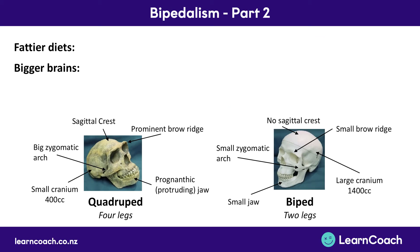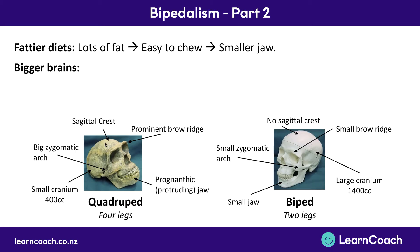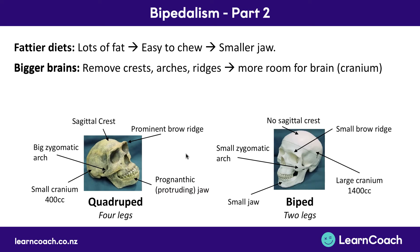So those are the five major changes, and all of these come down to fattier diets and bigger brains. Lots of fat makes food easy to chew, which is why we have a smaller jaw. In addition, we needed smaller jaw muscles. Every piece of bone that sticks out on your head — whether it's a sagittal crest, a zygomatic arch, or a big brow ridge — is for a muscle to attach to. So if you need weaker muscles because you're chewing fats which are easier to chew, then you only need smaller arches, ridges and brows. And eating fattier foods feeds your brain, so it grows bigger. Not having all these ridges and arches also allows more room for the brain — that's why the cranium has increased from 400 cc's up to 1400 cc's.